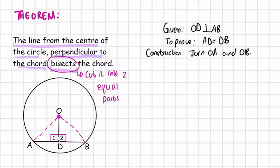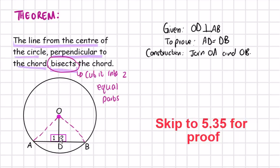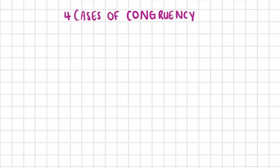Now since we have to prove that these two triangles are congruent, remember that there are four ways to prove that triangles are congruent. I'm going to do a short revision of that, but if you already have a good knowledge on congruency you can go ahead and skip to the actual proof.